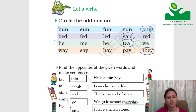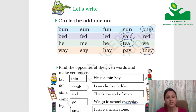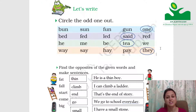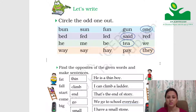In the next line: bed, led, red, said — all have the E-D sound. But said is spelled S-A-I-D, so its spelling is different — we have circled said. Next: e, me, b, t, we — T is the odd one out because its spelling is different even though the sound is the same.